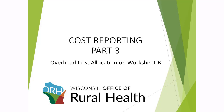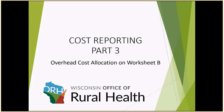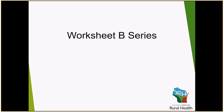This webinar today will cover the Worksheet B series of the Medicare cost report. In the last two webinar series you covered the S series as well as the Worksheet A series. Today we are going to build off of that and talk about how the costs determined on Worksheet A are now stepped down from the overhead departments to the revenue producing and non-reimbursable cost centers on your cost report. We will also discuss helpful tips for preparing and reviewing your B-1 worksheet, and two methods a critical access hospital can use to allocate these costs.